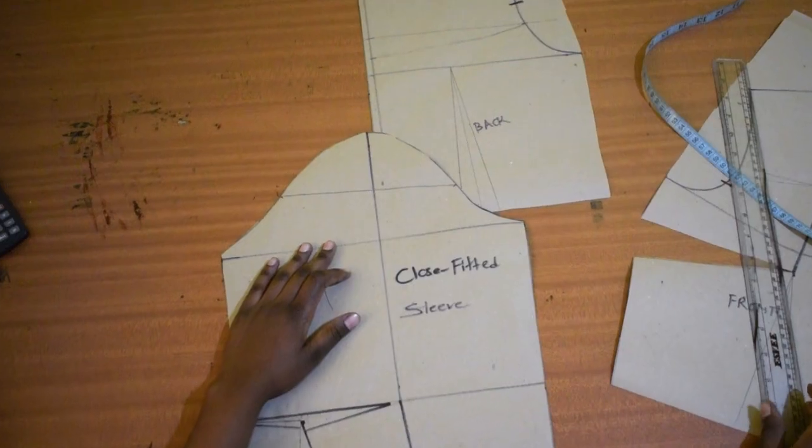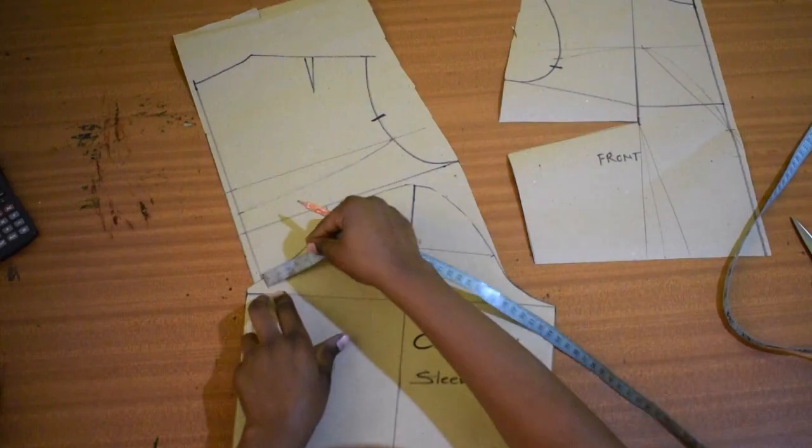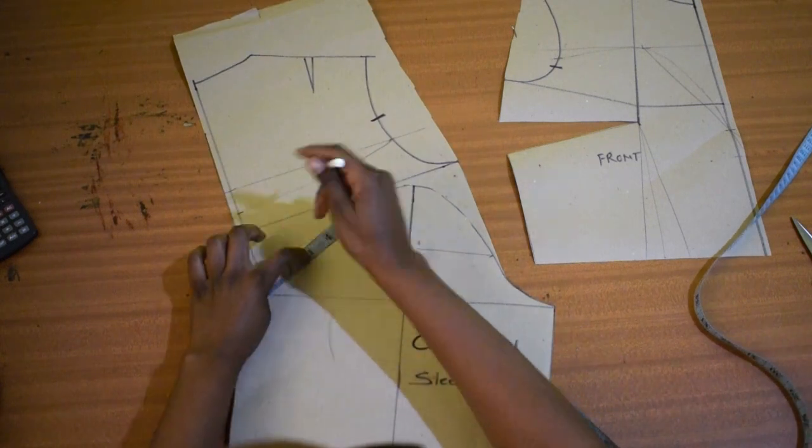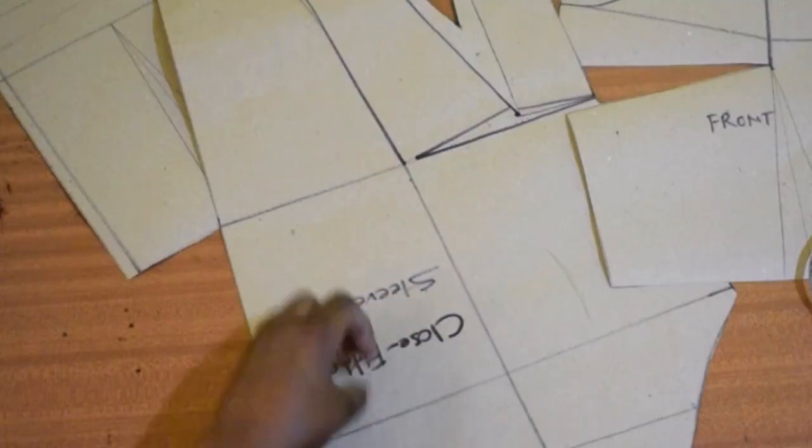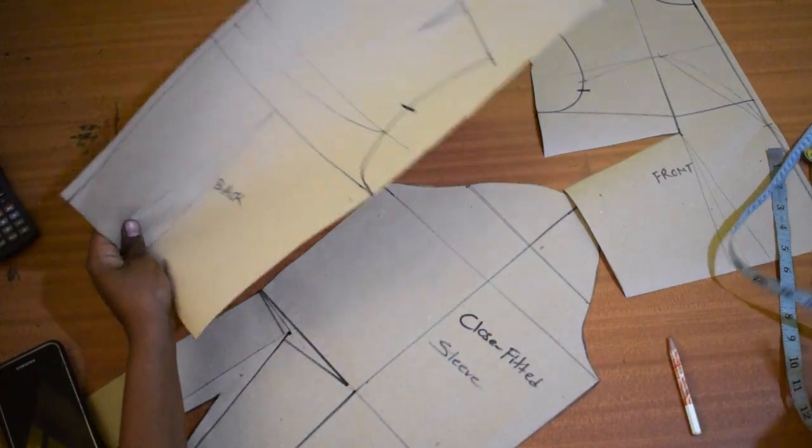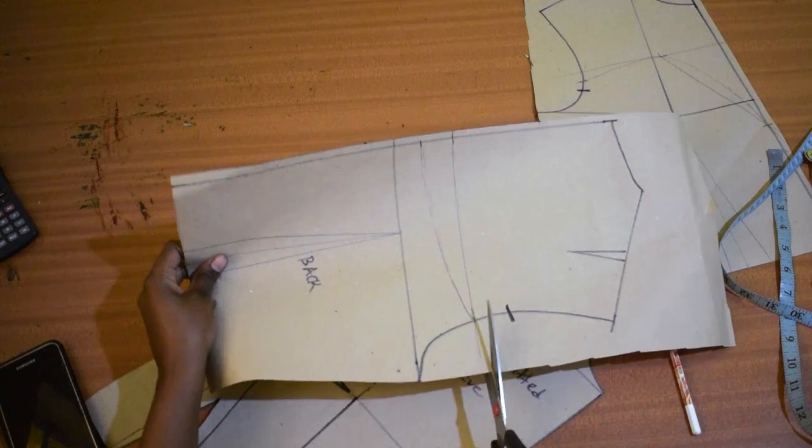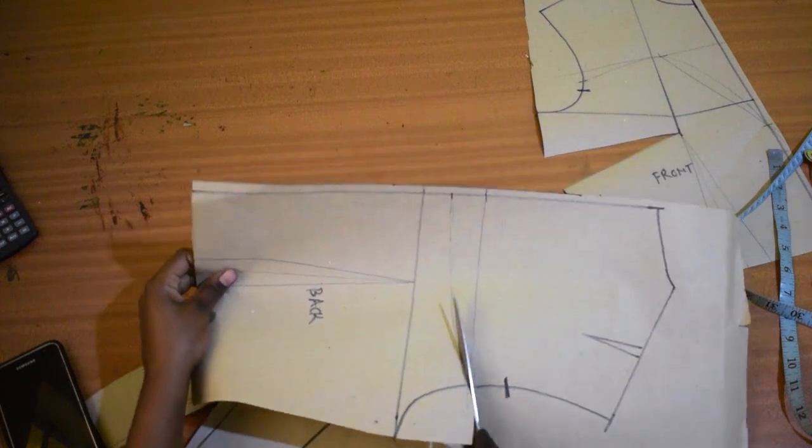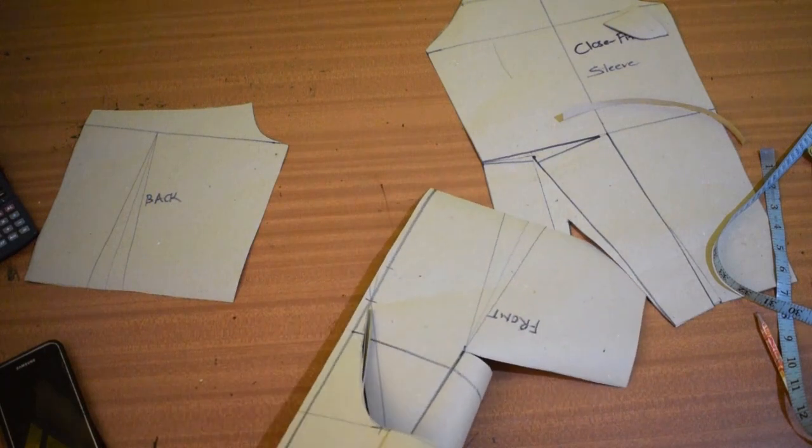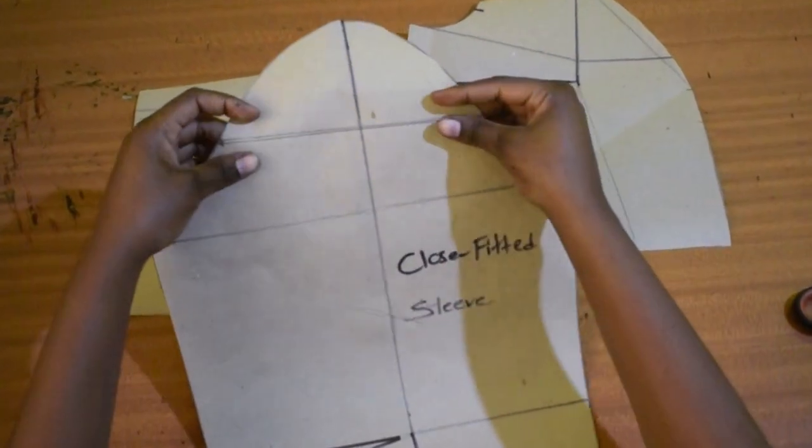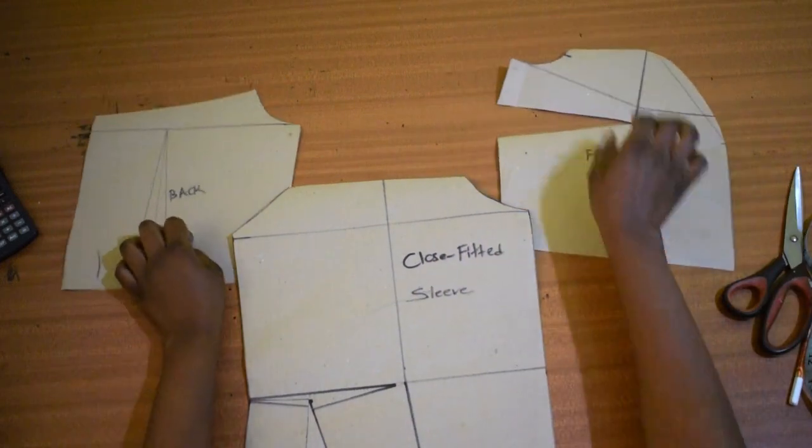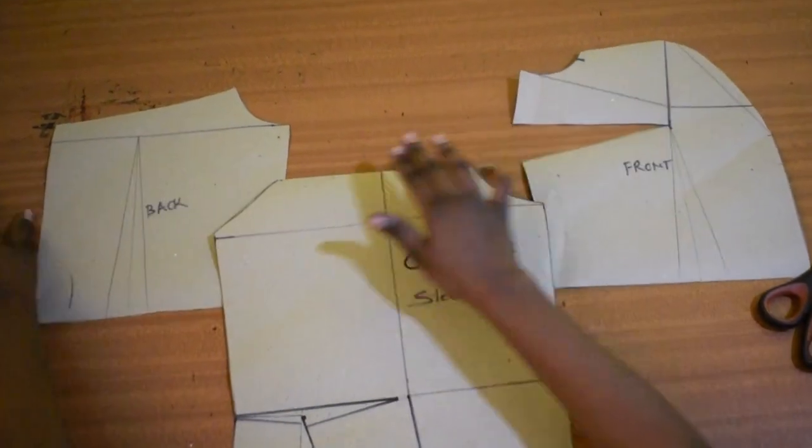Everything is a mess. It's not straight. It's okay. So what we shall do, we shall cut out this. I don't want to cut off the sleeve because I might need it. That's how you have it. This is the front, this is the back, and then this is the sleeve.